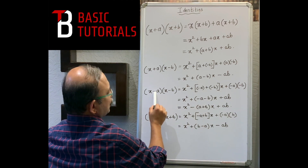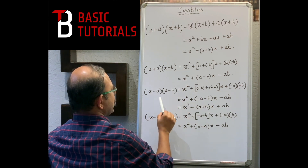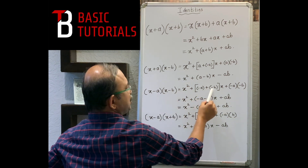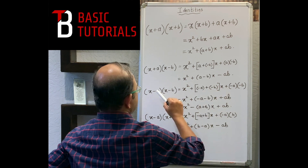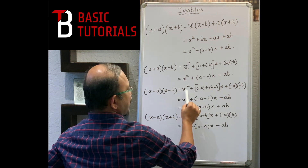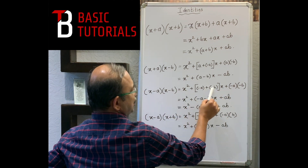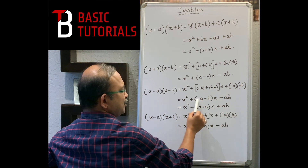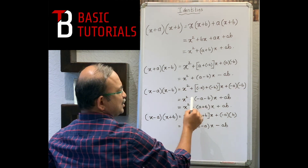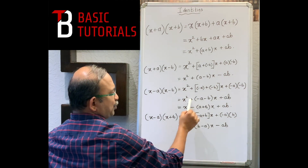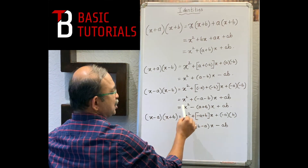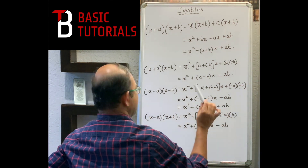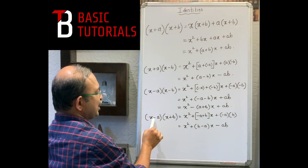For (x-a)(x-b): x² + ((-a) + (-b))x + (-a)×(-b). Taking the minus sign out: x² - (a+b)x + ab. So with both terms negative, we get x² - (a+b)x + ab.